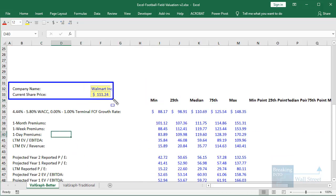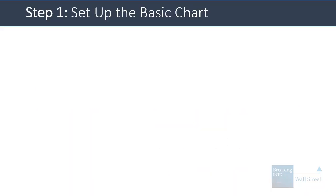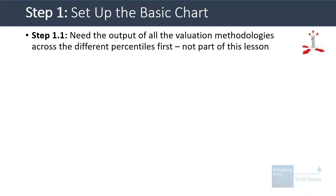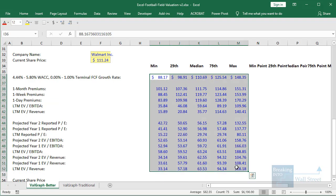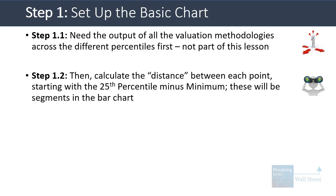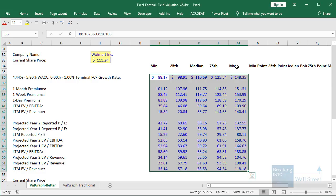We have the company here — Walmart — and we have their current share price. The first step of this process is that you need the output of all the valuation methodologies across the different percentiles. This is not part of the lesson — we're assuming that you already have a separate valuation file that outputs the implied share price or the company's implied value as a whole across these different methodologies. We cover this in some of our valuation tutorials, comparable company analysis tutorials, and others like that. Once you have that, then you have to calculate the distance between each point, starting with the 25th percentile minus the minimum. These will be the segments in the bar chart.